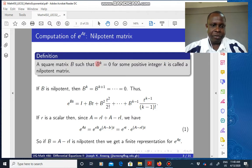So if B is nilpotent, it's easy to show that B to the K, B to the power K plus one, and so on will go to zero. B to the K plus one can be raised as B to the K multiplied by B. But B to the K is zero, and so this also goes to zero.